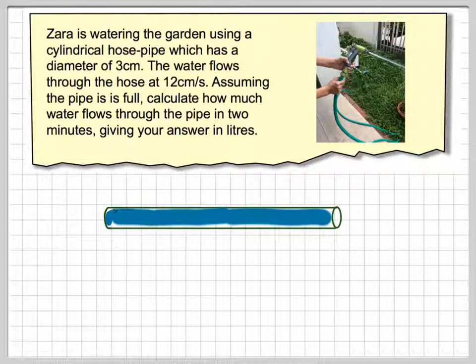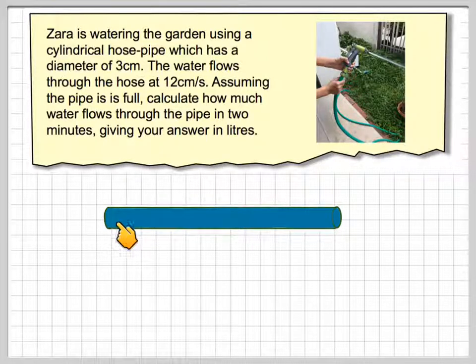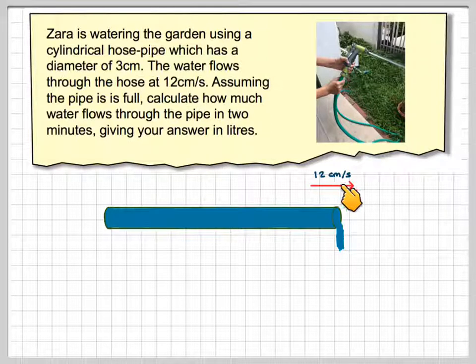So, the thing to do is to draw a diagram here. Okay, so here I have my pipe full of water, and then we have the water flowing out at 12cm per second. It's going to flow out.